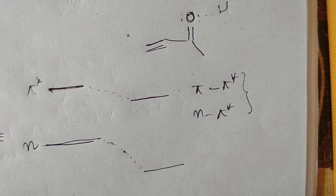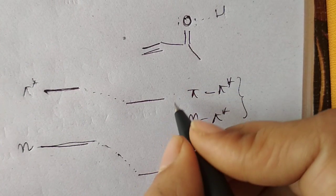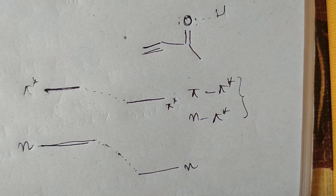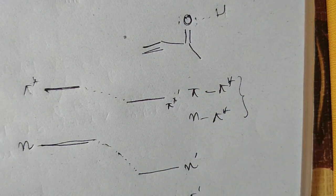This is the new pi star orbital, n, and pi. I'm denoting these with prime notation.